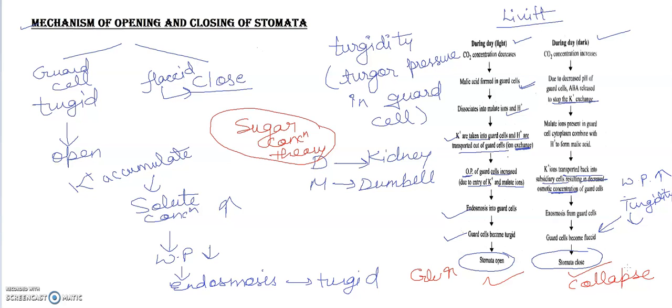So you can write sugar concentration theory as well as potassium ion concentration theory. And this is all about the potassium ion concentration theory. And this was given by a scientist, I told you earlier it was called as Levitt. So I think it is all about the transpiration chapter.